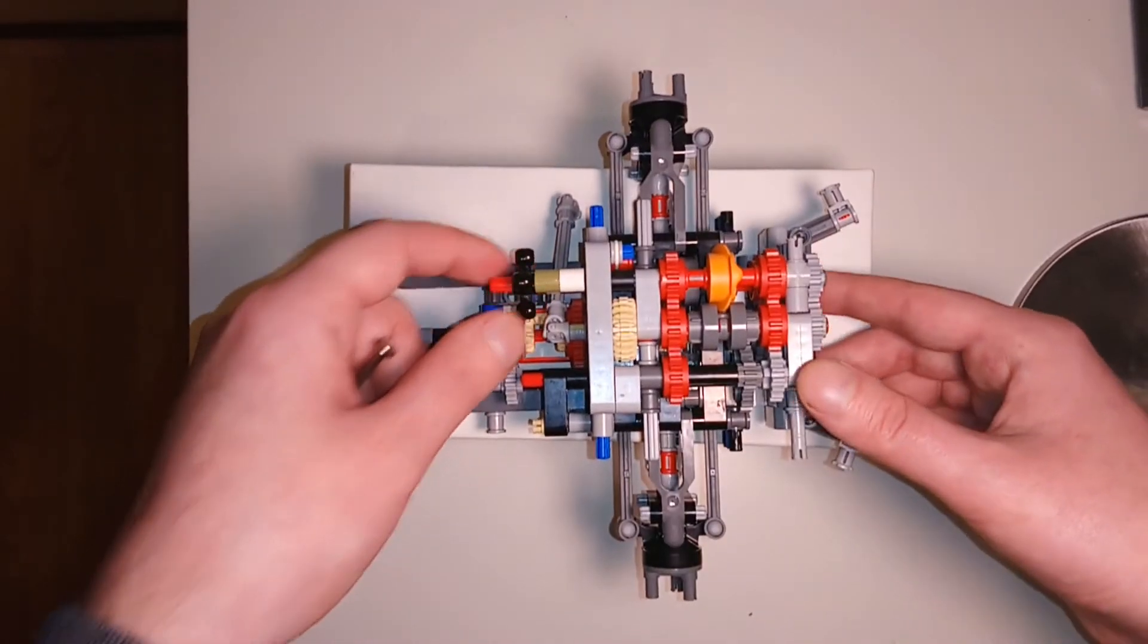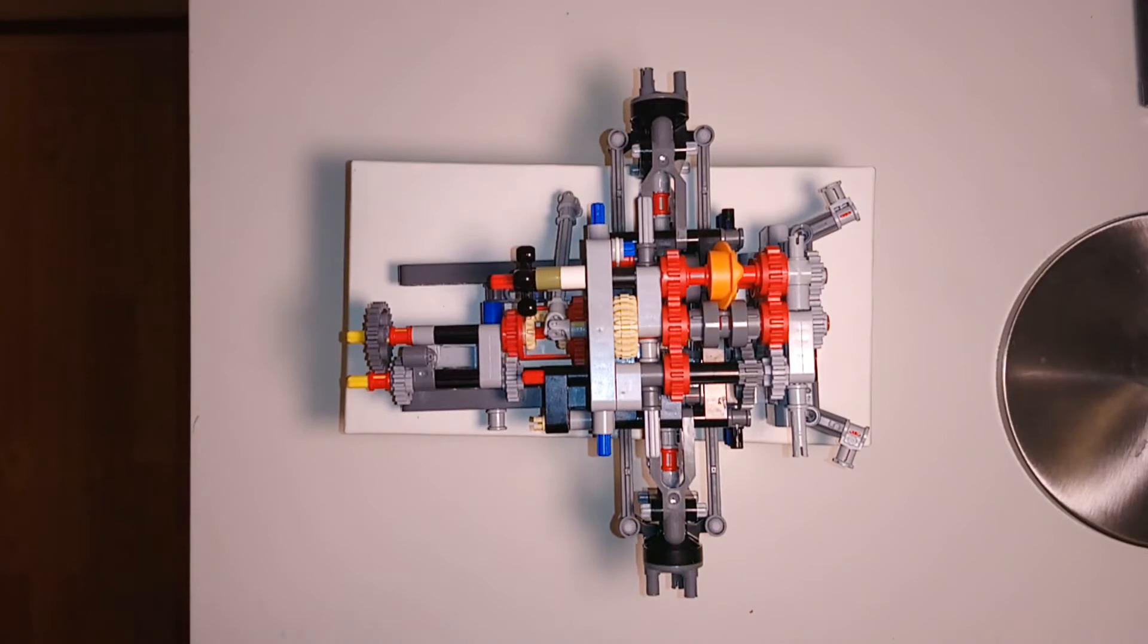Now I will explain how the rotational force at the input travels through the gearbox to allow for different amounts of rotational speed and torque at the output.